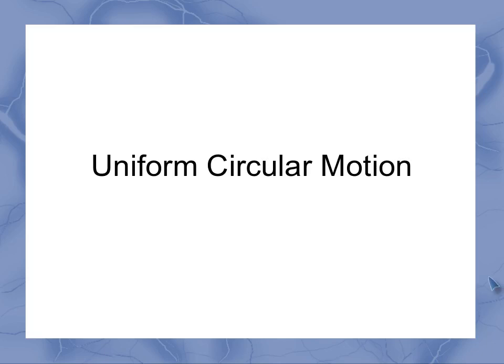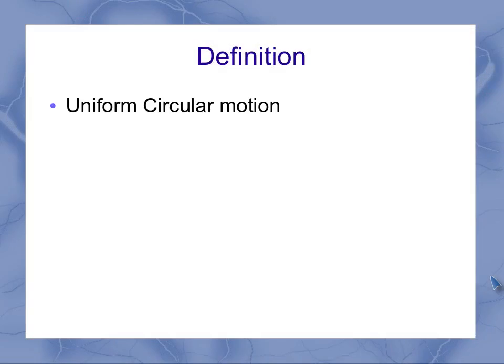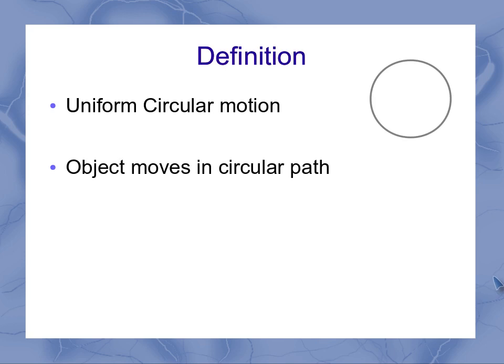Now we examine uniform circular motion. In uniform circular motion, part of our definition is that the object moves in a circular path. Now mathematically, that means that our radius is constant. So if I place my origin of my coordinate system there at the center, then every place along that path has the same value for r, and we use just a regular r to represent that radius.